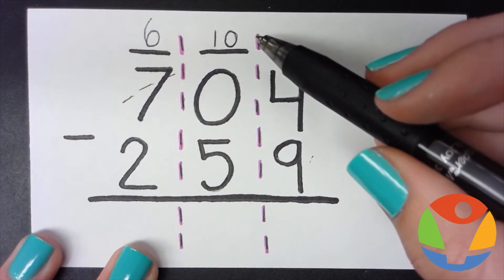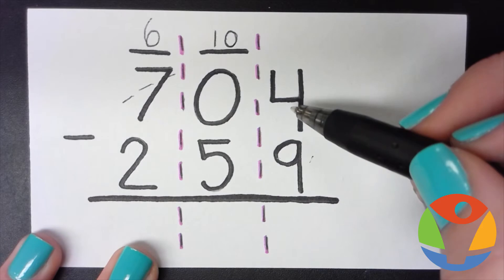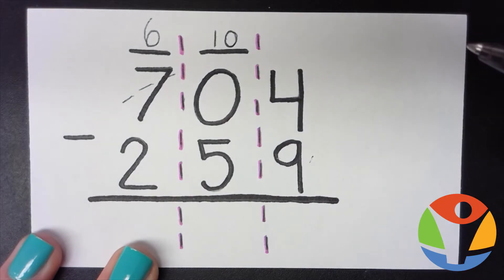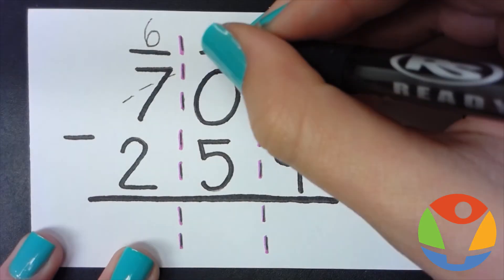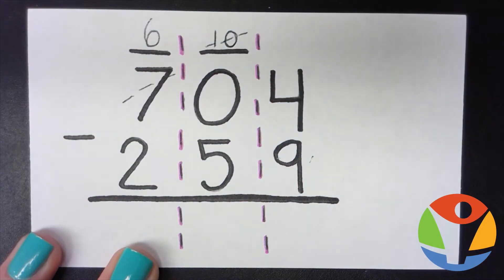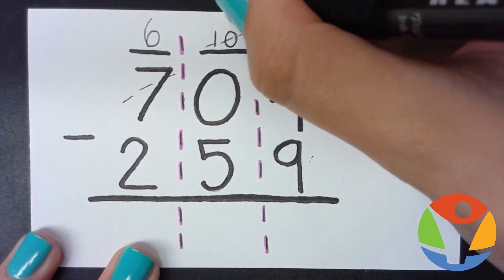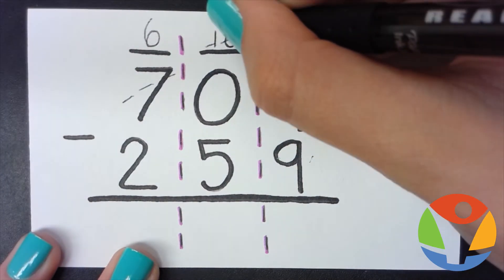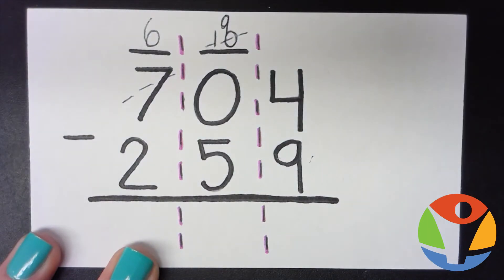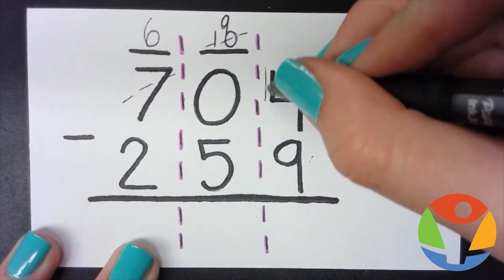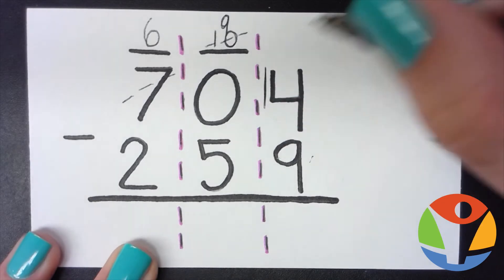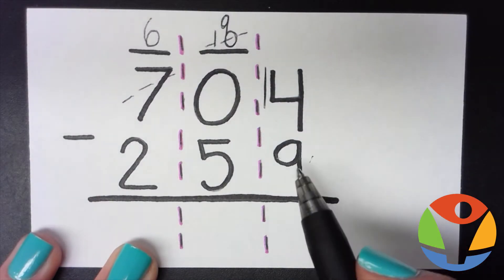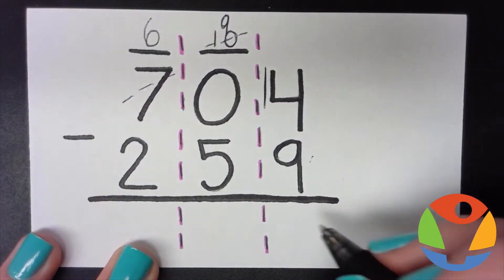Now we can borrow to make four bigger than nine. So we're going to cross out our ten and make that a nine, and we put a one right in front of the four. So this is 14 minus 9, which equals 5.